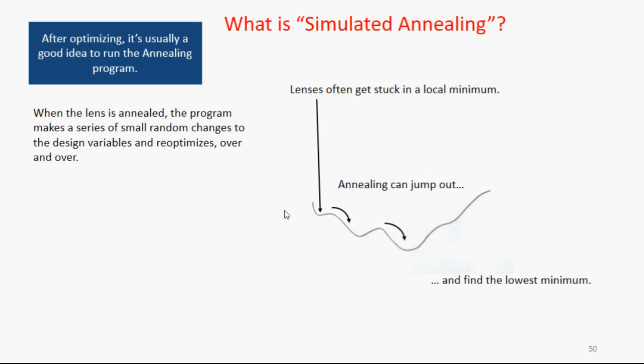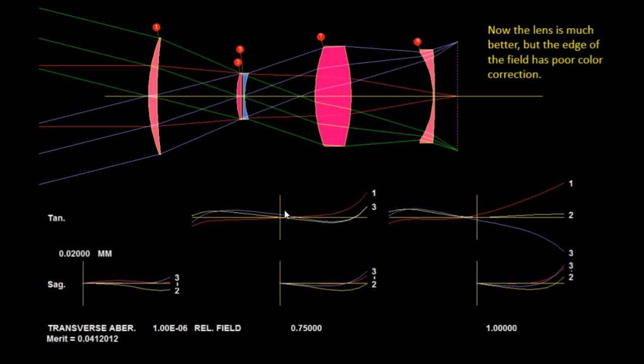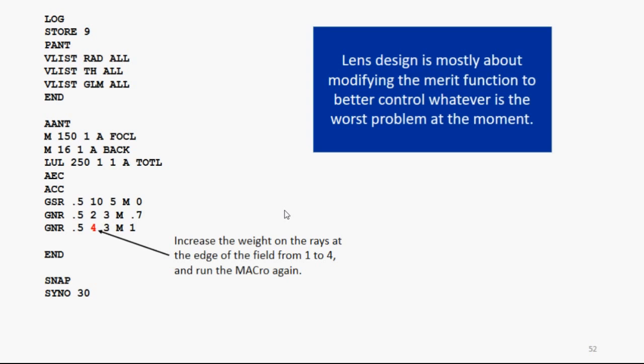So when you do this, you click the button for simulated annealing. Enter some data, let's say a temperature of 50 and say 40 passes. Click OK. And now the lens has changed, and it's really much better. This works so well, I use it all the time. Except that you'll notice the edge of the field has rather poor color correction. When you design lenses, most of the time you're looking at what went wrong and then modifying the merit function. That's what we do. We don't design lenses anymore. We design merit functions.